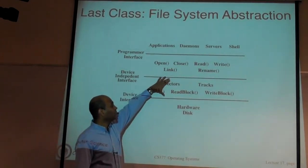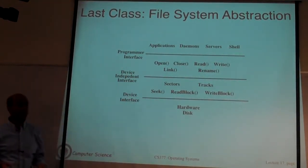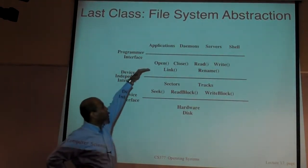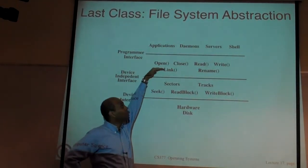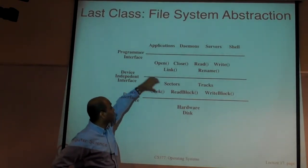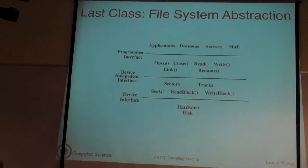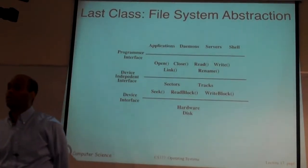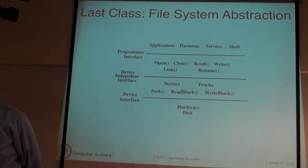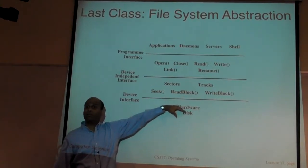Then at the very top you have your applications, and what sits between is inside the kernel. There are two layers: the interface the kernel exports to applications — the file system interface for accessing any storage data — and the lower-level interface that allows the kernel to actually read or write data to storage devices.